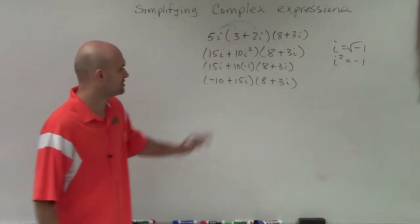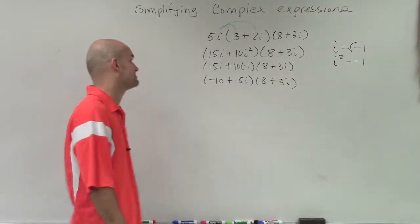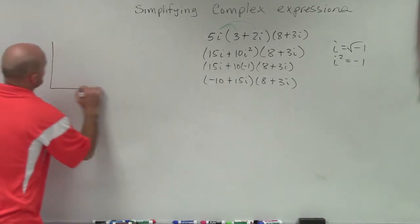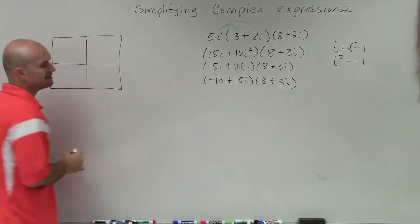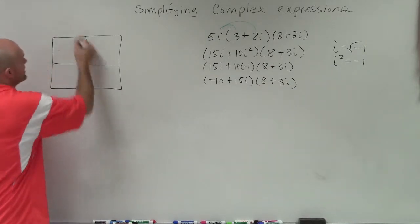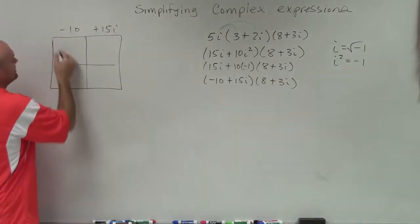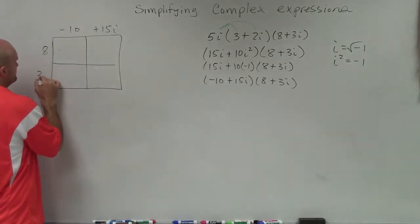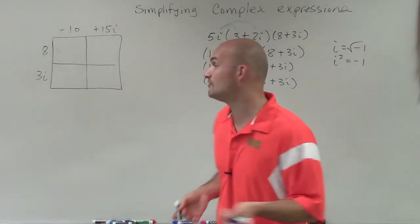I just rearranged the terms to make sure they're both in complex form. Now I need to multiply binomial times binomial. I can use my box method, or you could use FOIL or any other method. I like the box because it keeps everything organized. I'll write up top -10 + 15i, and then I have 8 + 3i. Now all I need to do is multiply to get my area for each box.